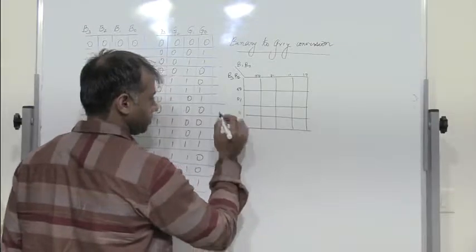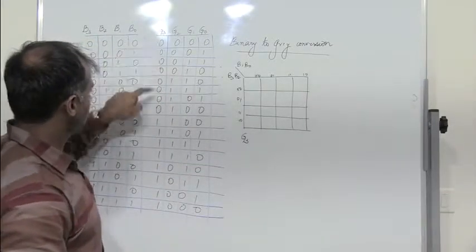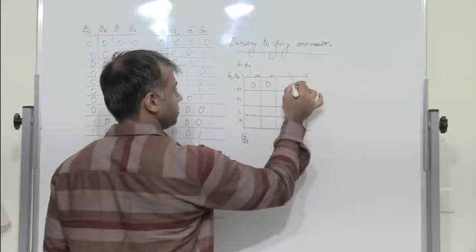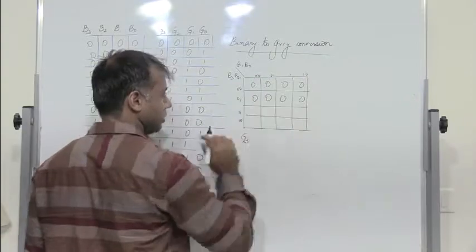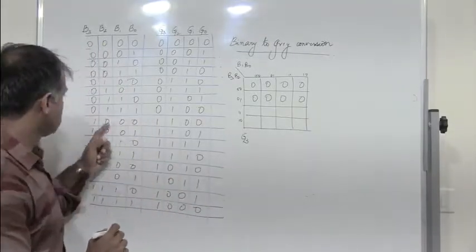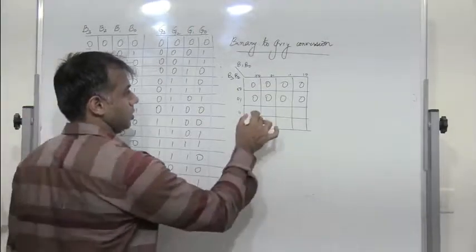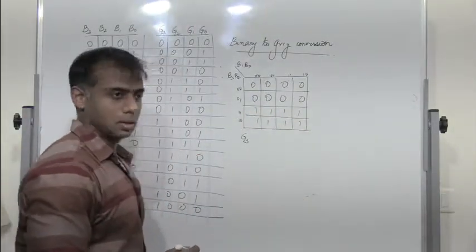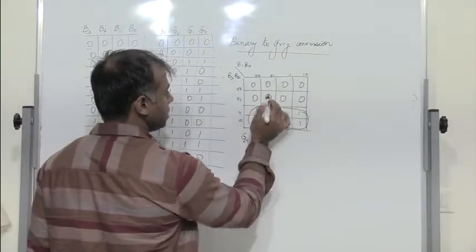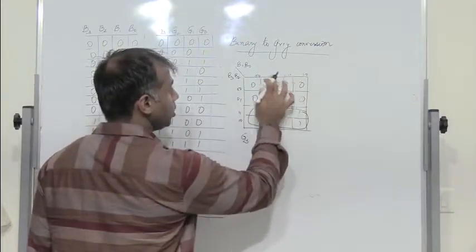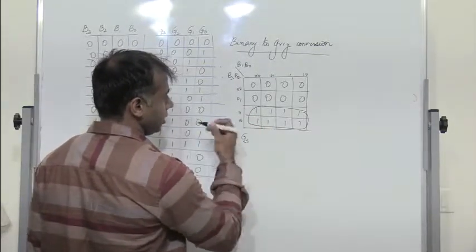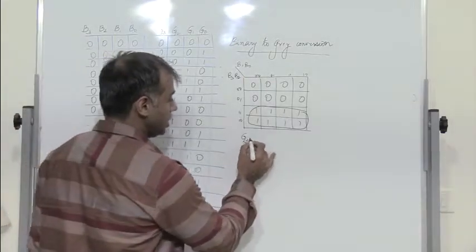I need G3. For G3, the value is 0 for combinations 0 through 7 — that is, when B3 is 0. And then I have a 1 for the remaining combinations, from 1,0,0,0 to 1,1,1,1 — combinations 8 through 15. So I combine these eight 1s. When I combine these eight 1s, B1, B0, and B2 all get eliminated because they appear in complement pairs. So G3 is simply B3.